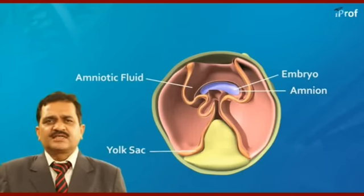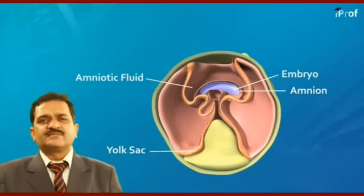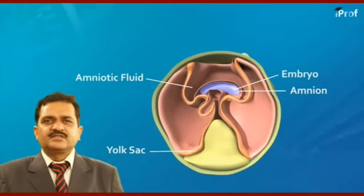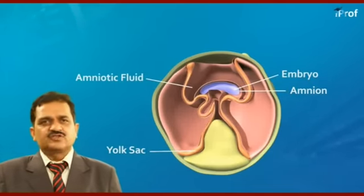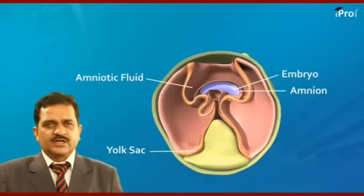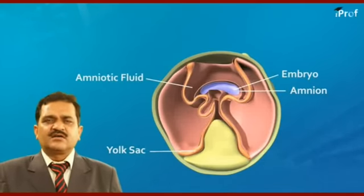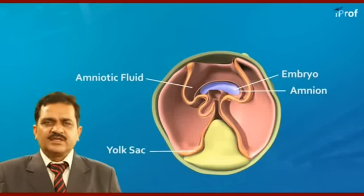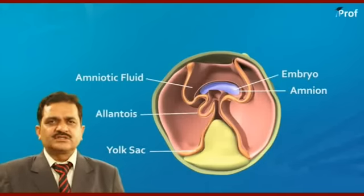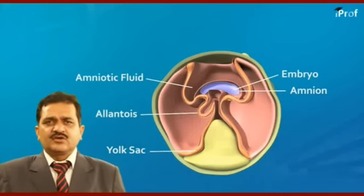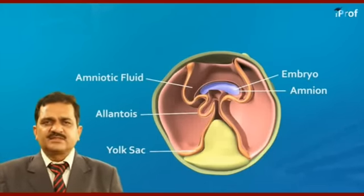The yolk sac is another extra-embryonic membrane, but yolk is absent in this layer. It is the first hemopoietic organ — during the amniotic stage, blood cells are first formed in the yolk sac.